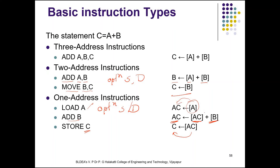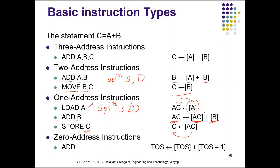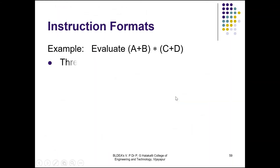These are the three basic instruction types. There is one more: the zero-address instruction. In this case, the locations of all operands are defined implicitly — the operands are stored in a structure called a push-down stack. Let's look at an example: evaluate (A + B) × (C + D).